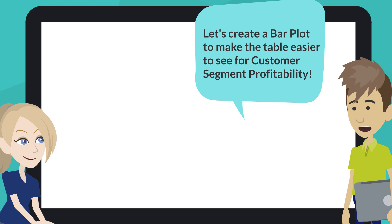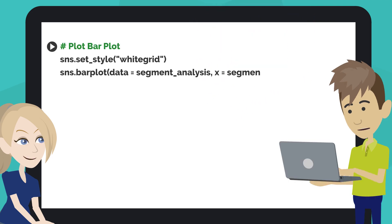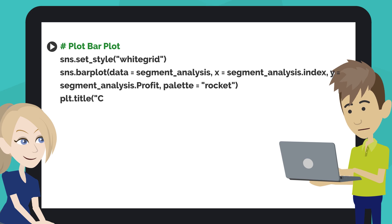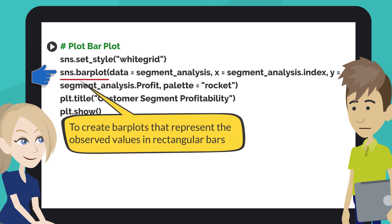Let's create a bar plot to make the table easier to see for customer segment profitability. Type the code like this into the next code cell of your notebook. This code creates the bar plot for customer segment profitability. The Seaborn.BarPlot function creates bar plots that represent the observed values in rectangular bars. To use this plot, we choose a categorical column for the x-axis and a numerical column for the y-axis, and it creates a plot taking a mean per categorical column.